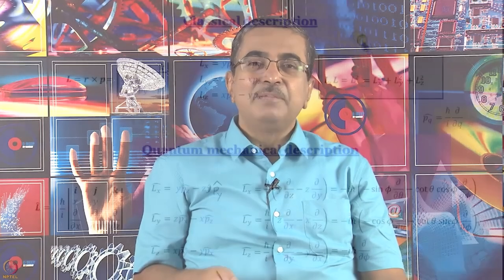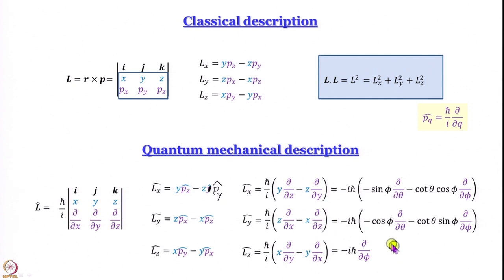With that brief message, let us continue. We have developed the classical description of angular momentum, and from there we have built a quantum mechanical description as well. We have written down expressions — we have not really written down the expression of the L² operator explicitly yet, but in spherical polar coordinates the operator of utmost importance is minus iħ del/del φ, which is the Lz operator. We will see what the L² operator is in a moment.